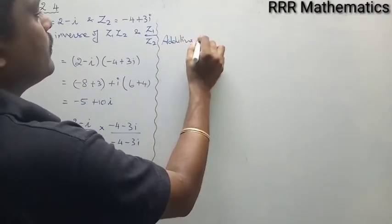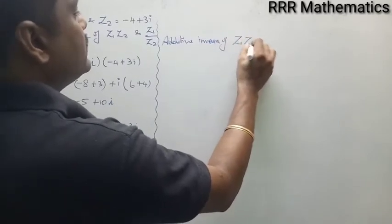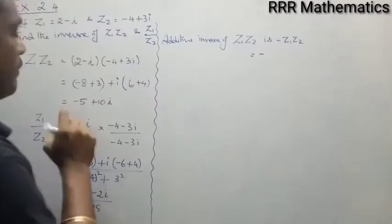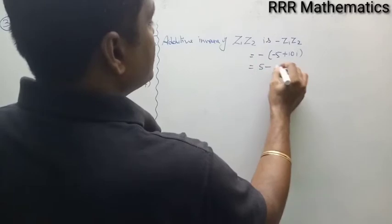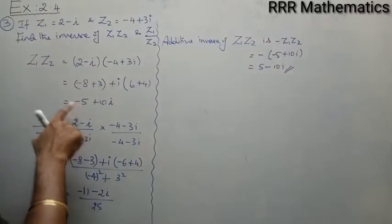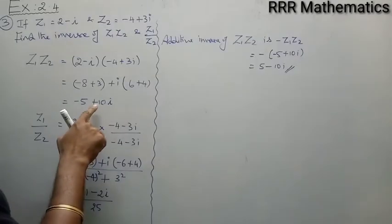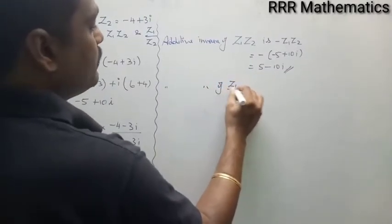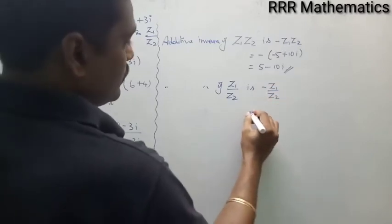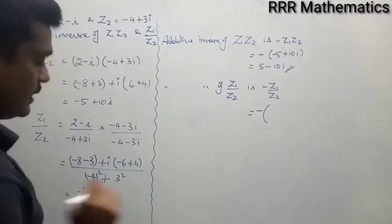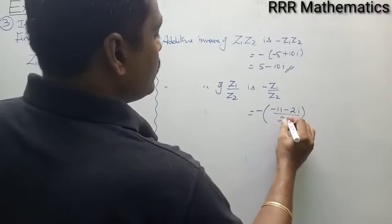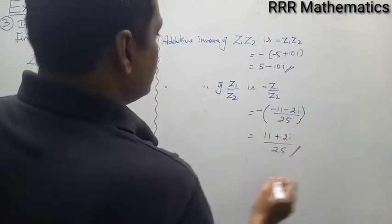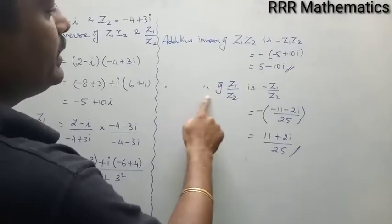Additive inverse of z1·z2 is minus z1·z2. That is, minus of (minus 5 plus 10i), which gives 5 minus 10i. Additive inverse of z1 by z2 is minus z1 by z2. What is z1/z2? It is (minus 11 minus 2i) by 25. So the additive inverse is minus of (minus 11 minus 2i) by 25, which gives (11 plus 2i) divided by 25. We are simply changing the sign.